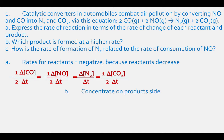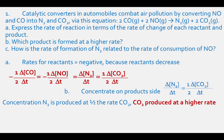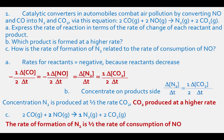For part B, concentrate on the product side of the equation: the change in concentration of N2 per delta time equals one-half the change in concentration of CO2 per delta time. This means that the concentration of N2 is produced at half the rate of CO2. Therefore, CO2 is produced at a higher rate. For part C, the balanced equation indicates that one mole of N2 is produced for every two moles of NO that are consumed. This means the rate of formation of N2 is one-half the rate of consumption of NO.